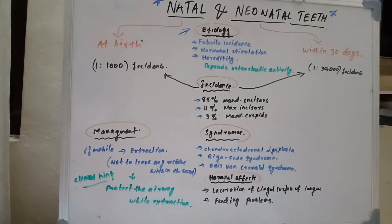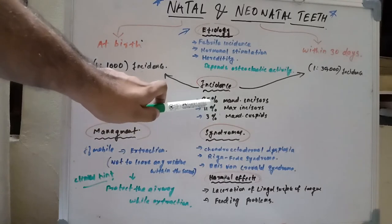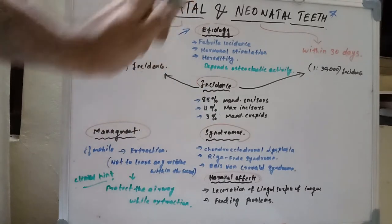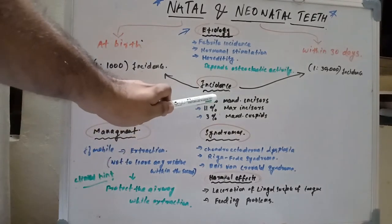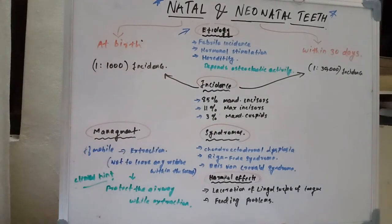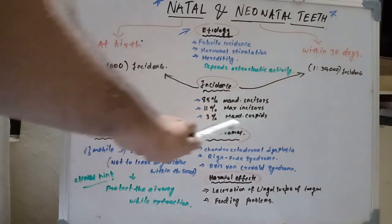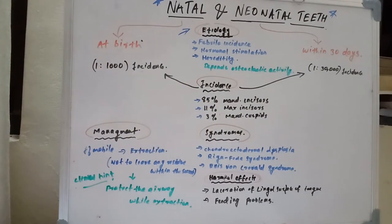Coming to incidence, natal teeth are seen in one out of every 1,000 newborns, and neonatal teeth in one out of 30,000 newborns. The most common tooth involved in these two phenomena is the mandibular incisor, accounting for 85% of conditions. Maxillary incisors come next at 11%, and mandibular cuspids are the least at 3%.